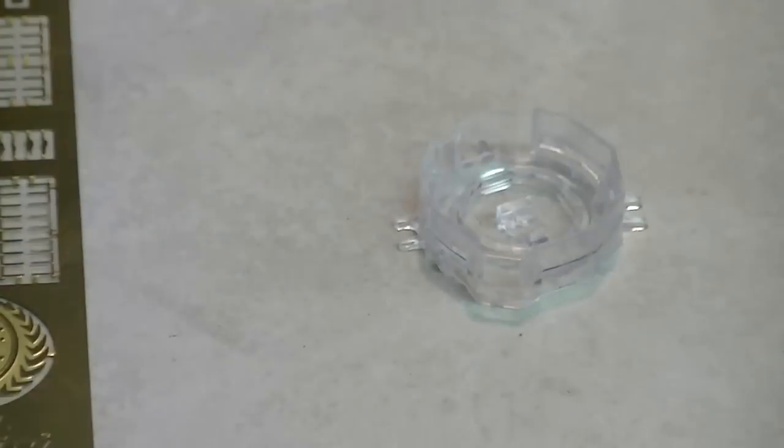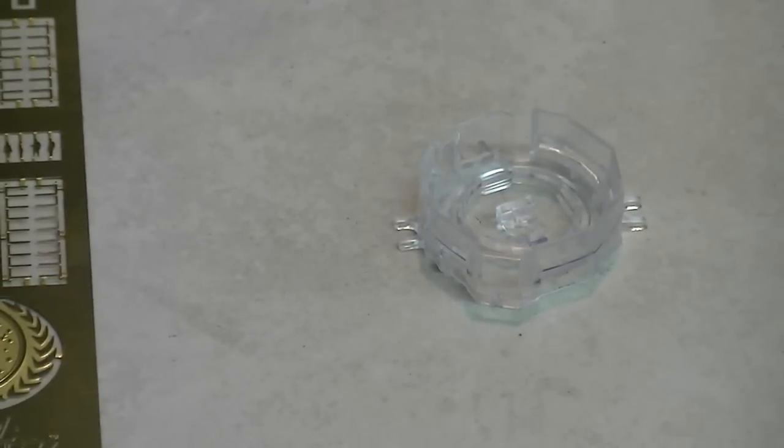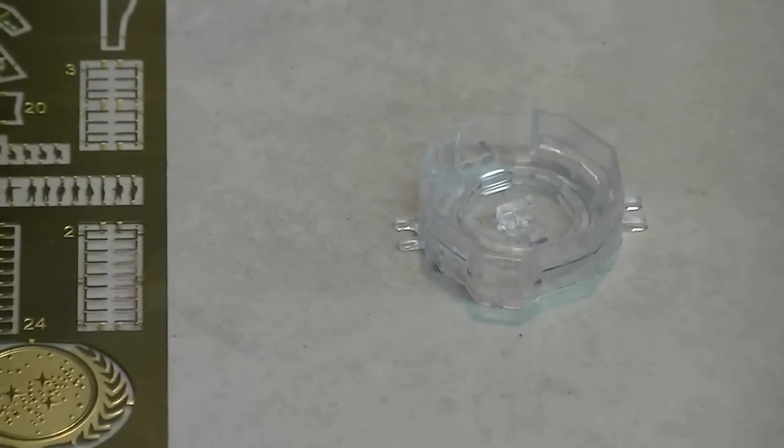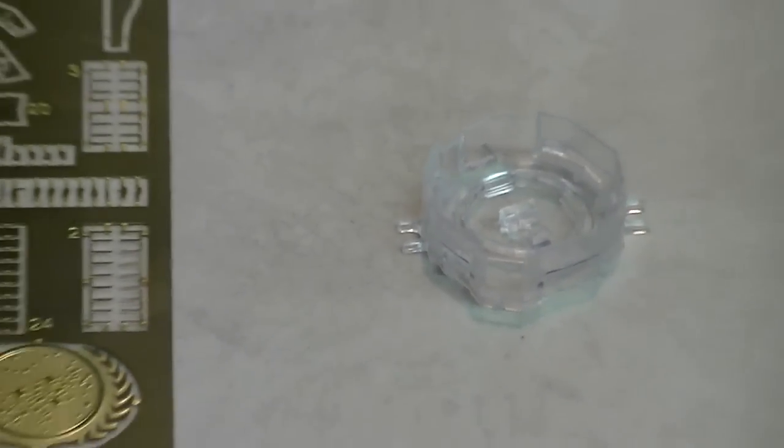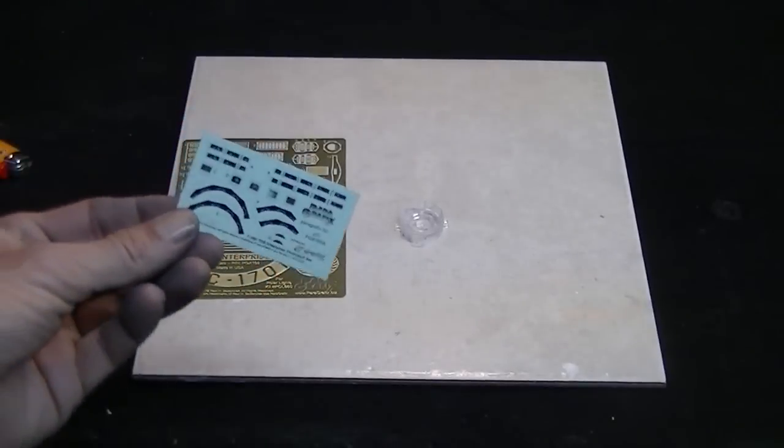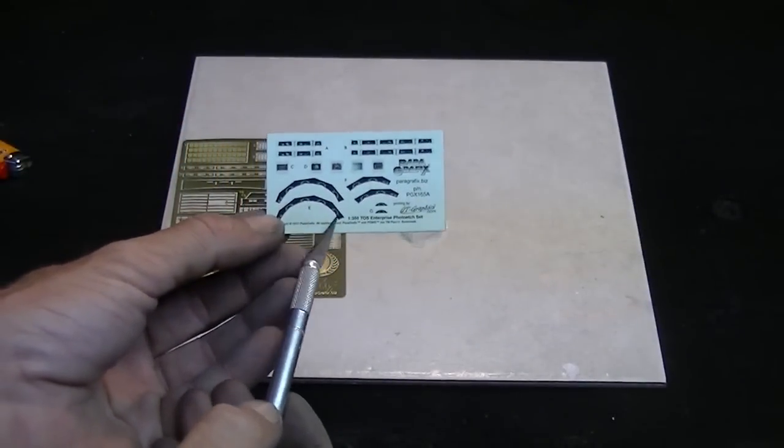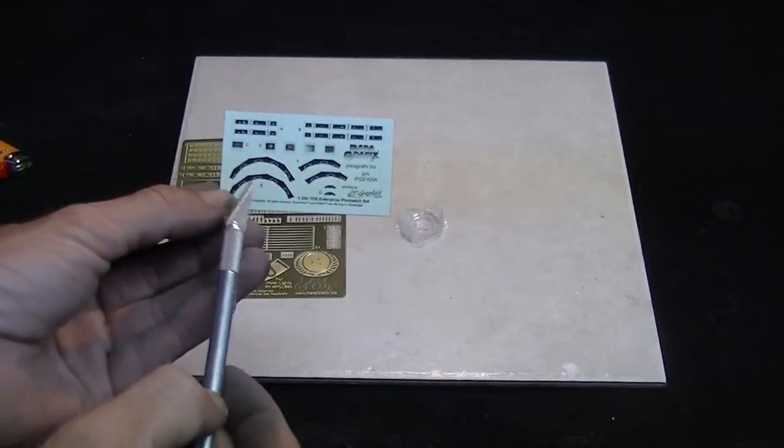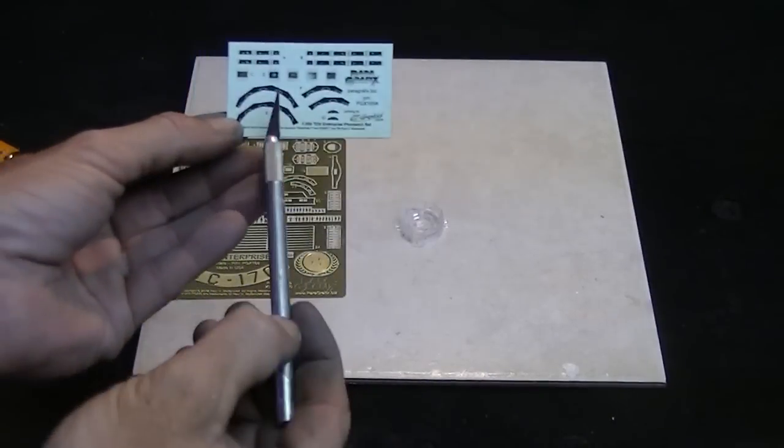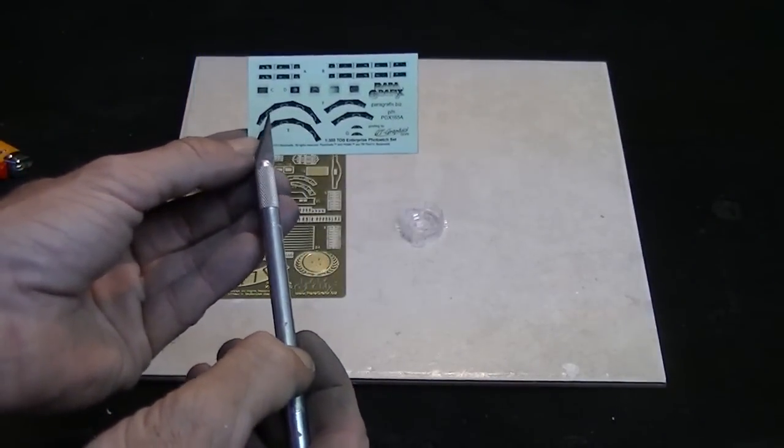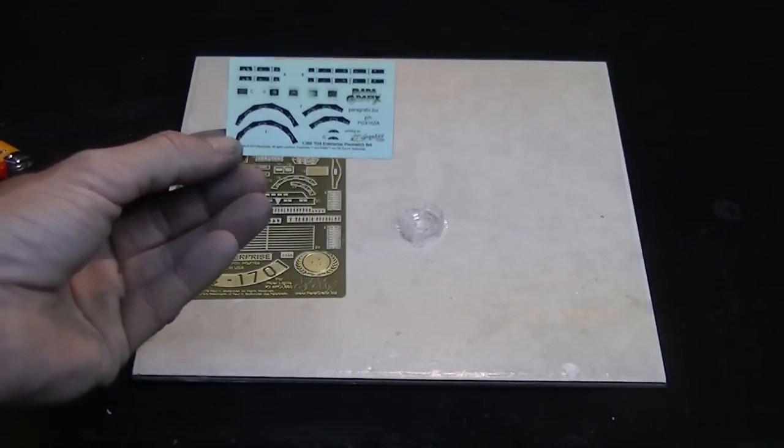These little control panels are all included here in detail on the photo etch parts. And then you also get this nice little decal set that comes with it. You can actually put these on the tops of these photo etch parts here, and when you have it light blocked properly, these little individual control panels will be lit up. So that'll be really cool.